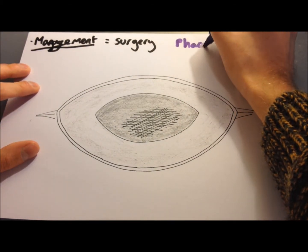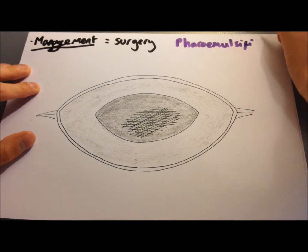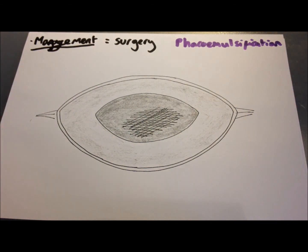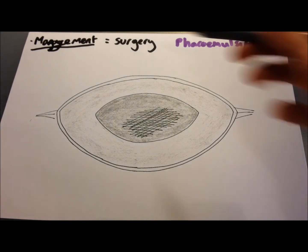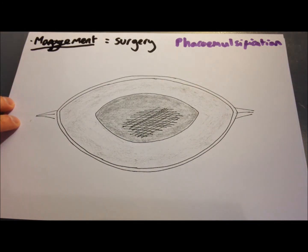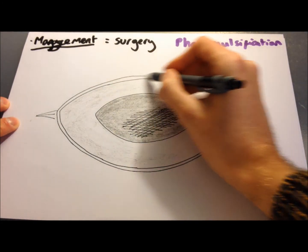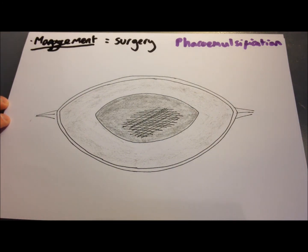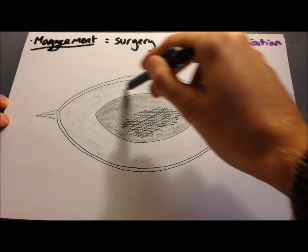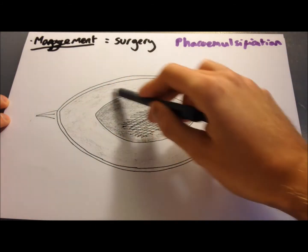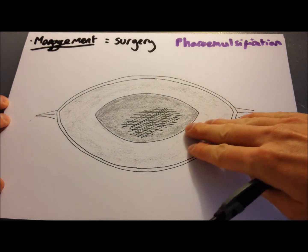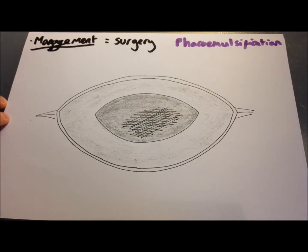Once you and the patient have decided to go for surgery, the procedure normally carried out is phacoemulsification. This is a procedure where ultrasound is used to break down the contents of the lens and replace it with an artificial intraocular lens. The surgeon first makes a clear corneal incision, then a hole in the lens capsule — called a capsulotomy. They then emulsify the cortex and nucleus with an ultrasound probe and extract it, aspirate the remaining soft lens matter, and insert an artificial intraocular lens.